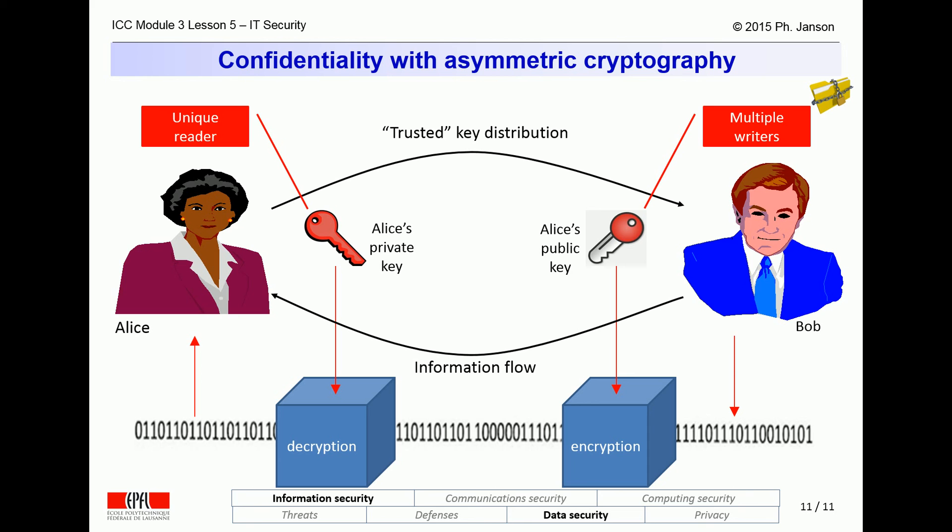In an asymmetric crypto scenario such as depicted here, every party needs to have its own pair of keys: one secret decryption key and one related, publicly known encryption key. If Bob wants to encrypt information that only Alice should be authorized to decrypt, Bob needs to encrypt it using Alice's public key. Then only Alice will be able to decrypt that information, because only she has the secret decryption key related to the public key Bob used for encryption. Asymmetric cryptosystems allow anyone — multiple parties — to encrypt and send information destined for one single reader, Alice in this case.